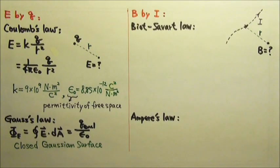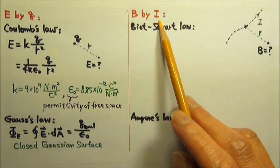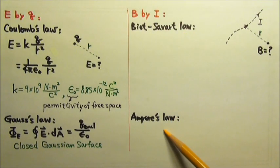In this magnetism unit, we will learn to find the magnetic field produced by electric current. There are also two laws for us to use.